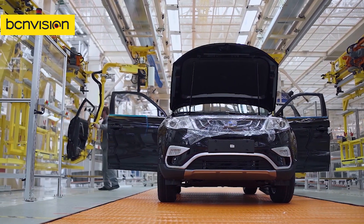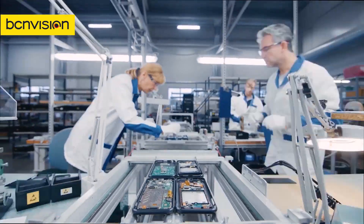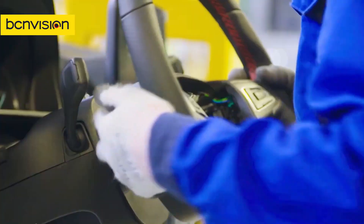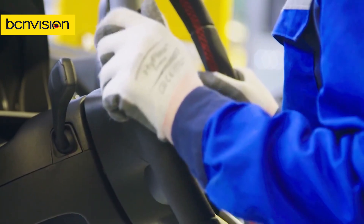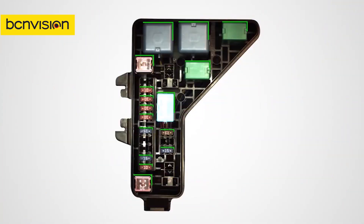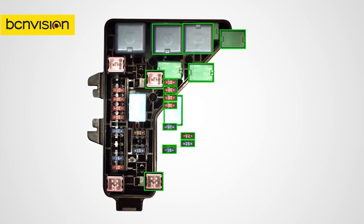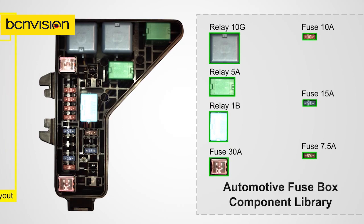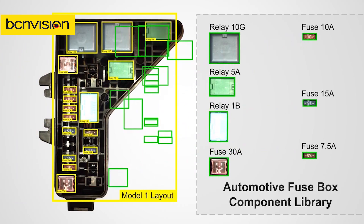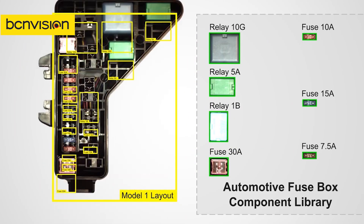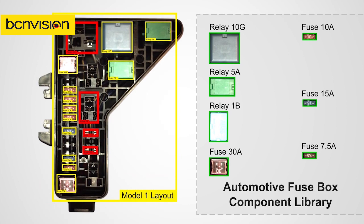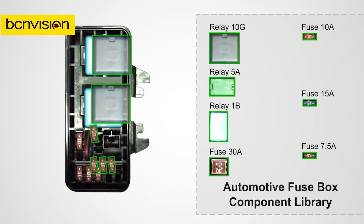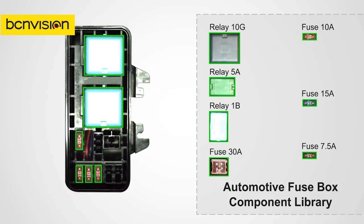Manual inspection was once the only practical method for assembly verification. Parts can have too much variation and frequent production line changes make it difficult to reprogram a vision system quickly. But because Vidi's neural network uses multiple images to create a working model for each component, it can handle part variation with ease. Plus, operators can use Vidi to create a component library and use that to create custom layouts right on the factory floor, making new line configurations quick and easy to do.